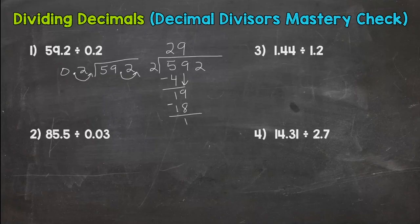Subtract 19 minus 18 is 1. Bring down that 2. Alright 12 divided by 2 is 6. Multiply out and I get a nice clean cut 0 there which means I'm done and I went all the way over to my lowest place value. So 296 for number one.